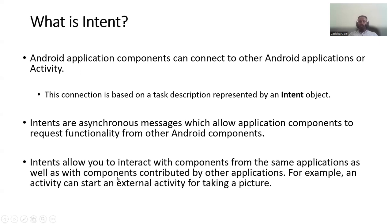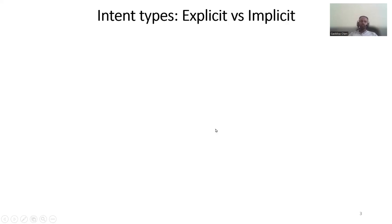Simply said, intent allows you to interact with components from the same application as well as through different applications. For example, an activity can start an external activity for taking a picture, making a phone call, or scanning nearby Wi-Fi. There are two types of intent: explicit, where you specifically specify the activity you want to launch from your current activity, and implicit, where your intention is to open another application from your phone.